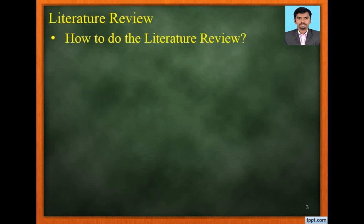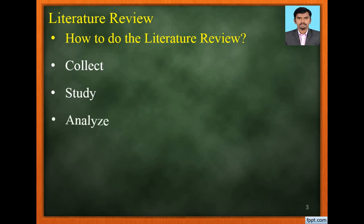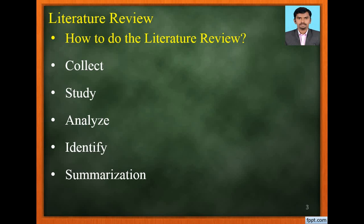How to do the literature review? It consists of the following phases: Phase 1 Collect, Phase 2 Study, Phase 3 Analyze, Phase 4 Identify, and Phase 5 Summarization. Now we will see them one by one.